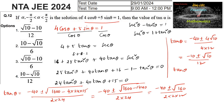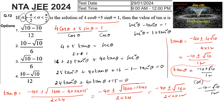Since alpha lies between minus pi by 2 and plus pi by 2 and alpha is the solution of the equation, tan alpha = (√10 − 10) / 12, which is option A.